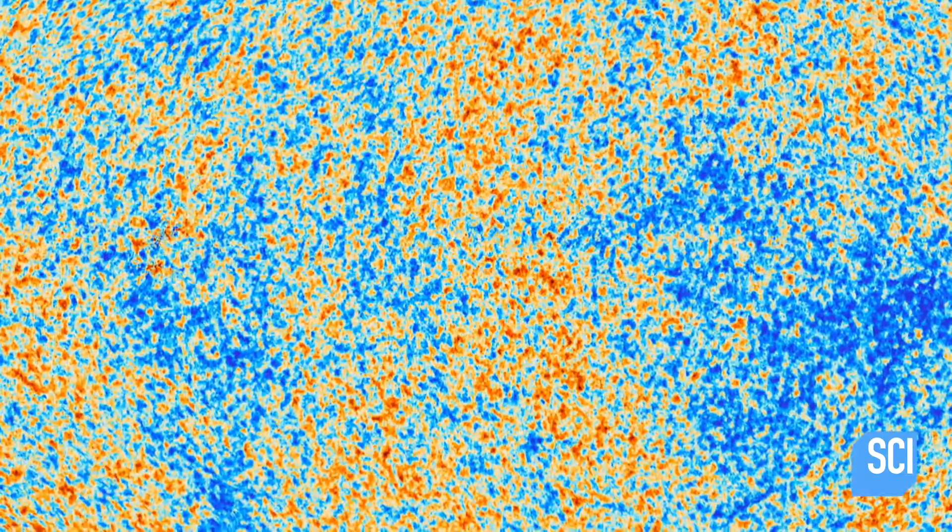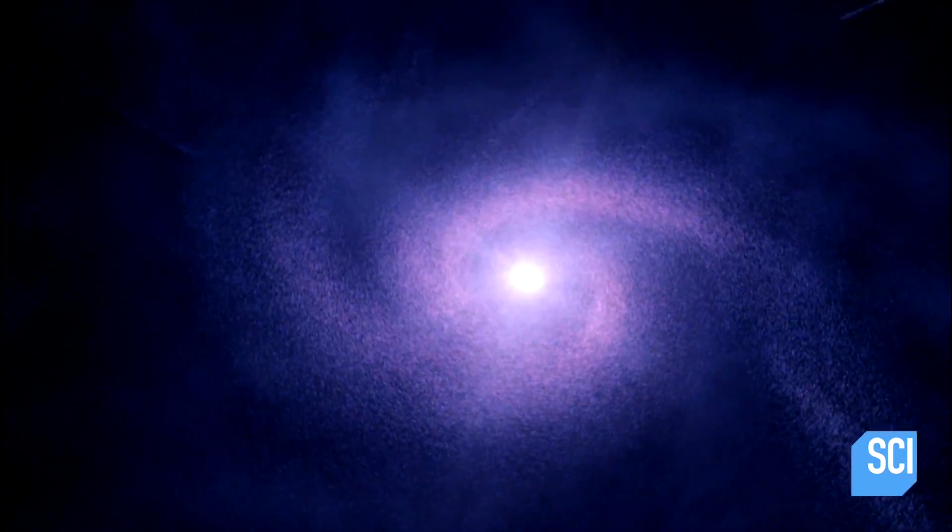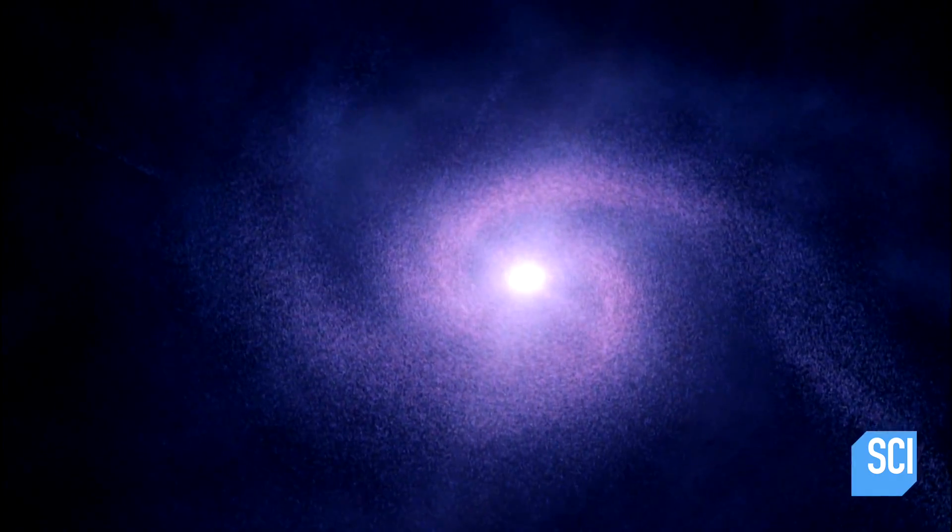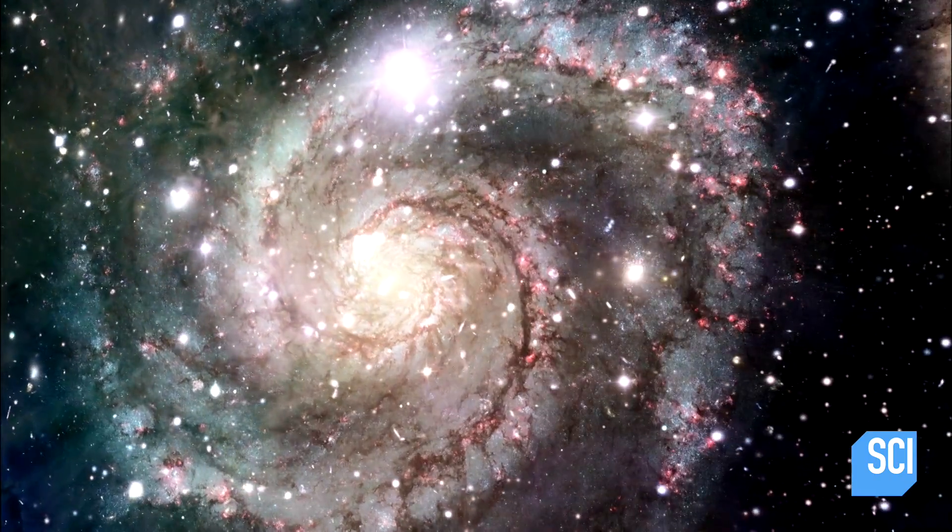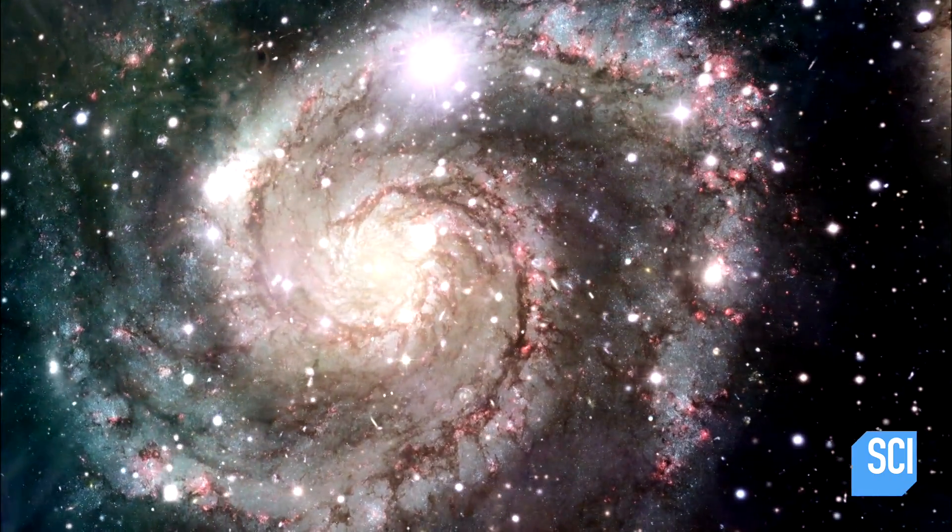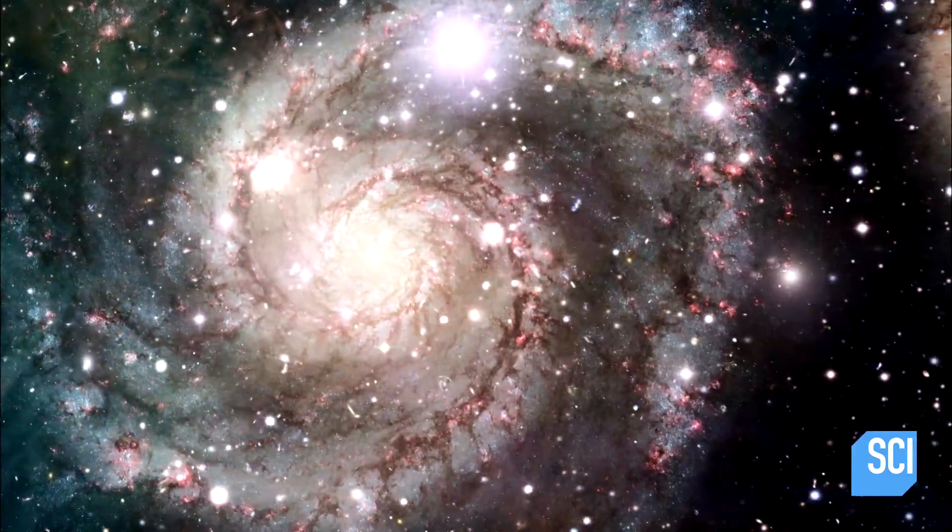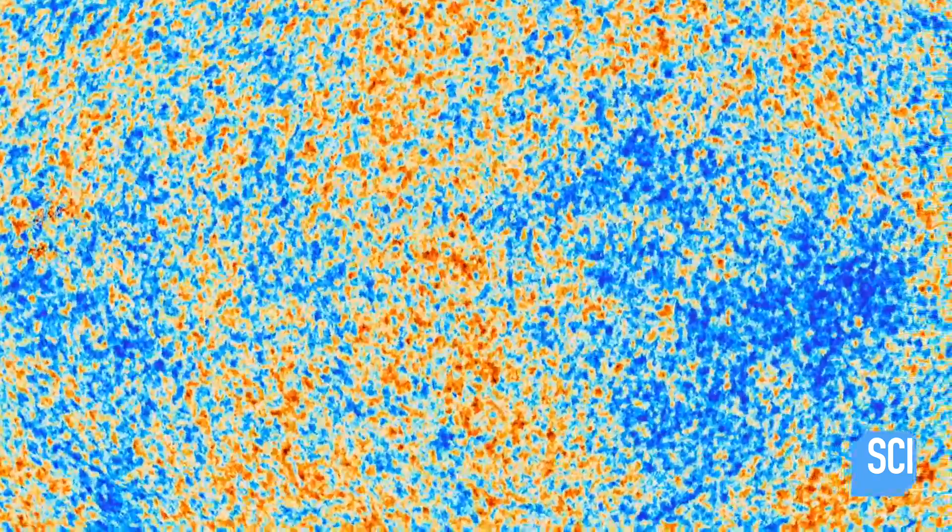The regions that appear a tiny bit warmer had slightly more material. They would go on to form galaxies and all of the structures we observe in the universe today.